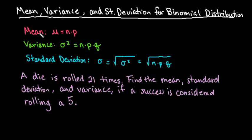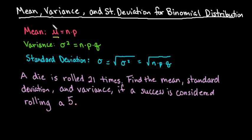The mean for a binomial distribution is found by taking n, which is the number of trials in your binomial experiment, times the probability of success p. Remember that you must always use mu when talking about the mean of a probability distribution, because you're talking about the entire population — it's a population parameter, so we use mu.